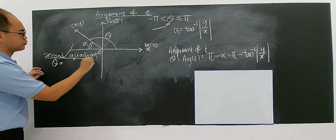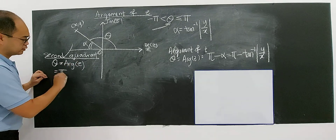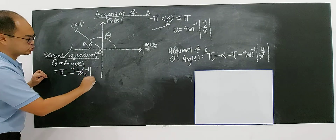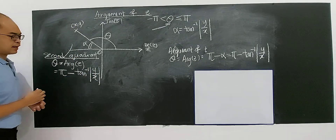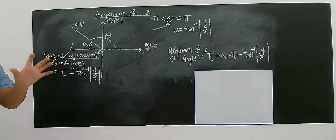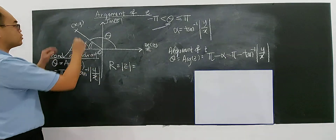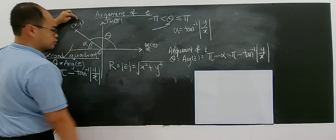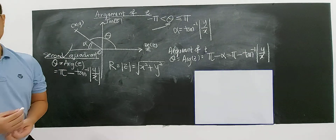For the second quadrant, the argument is pi minus arctangent of the modulus of Y over X. The modulus will still be the same — you take the value of X squared plus Y squared and put the square root. Then you have the modulus and the argument for this complex number.